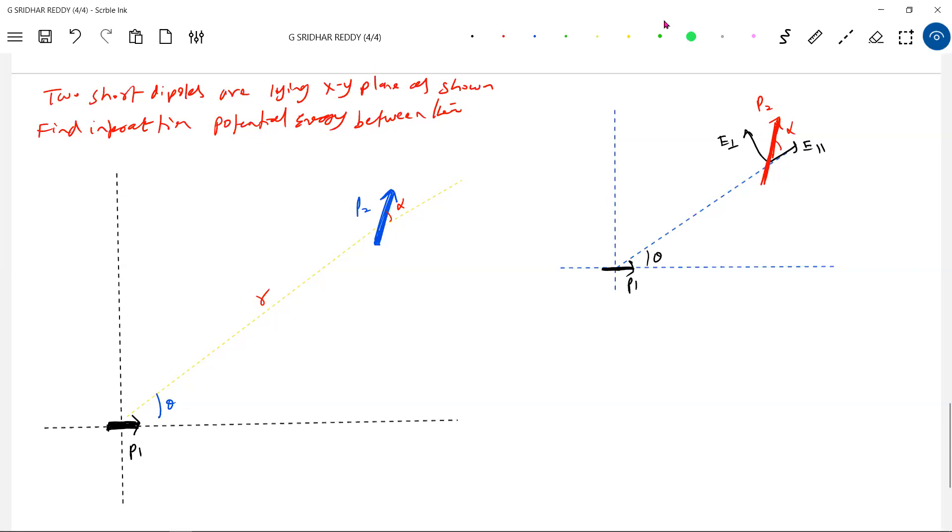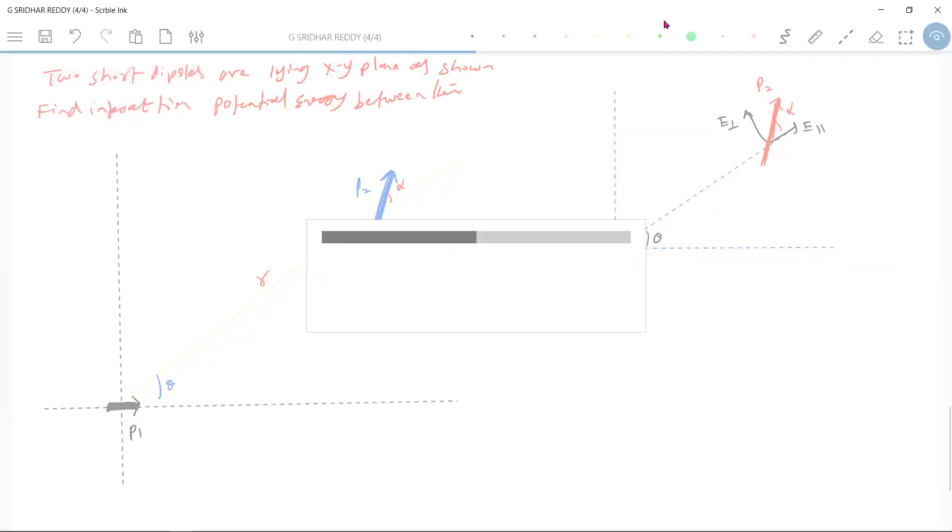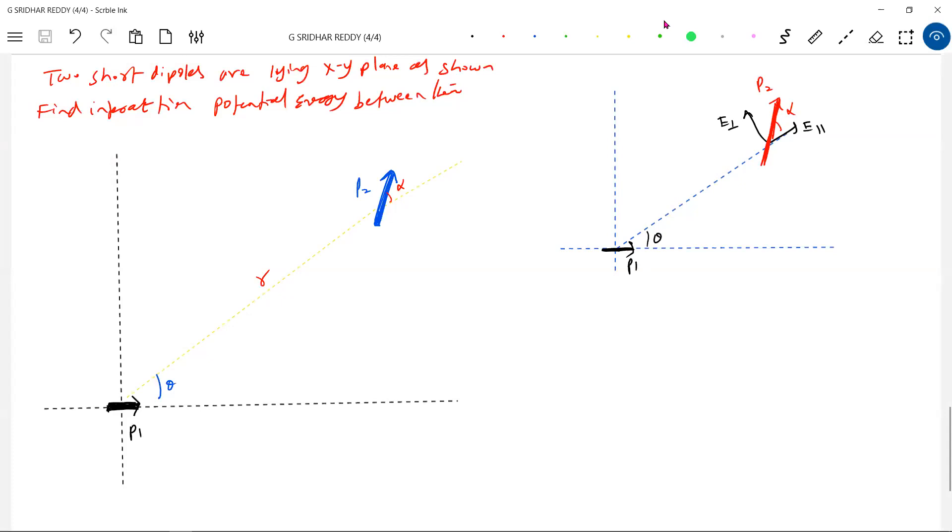You have to take help of your mathematics here. Rather than fighting with the concept, let me begin. The total interaction potential U should be P2·E_parallel·cosα.